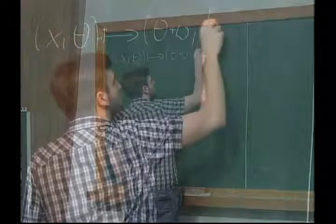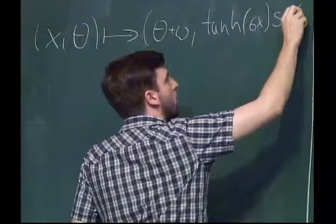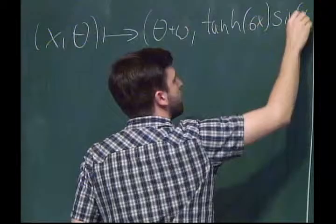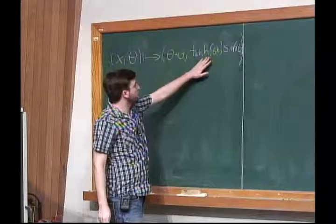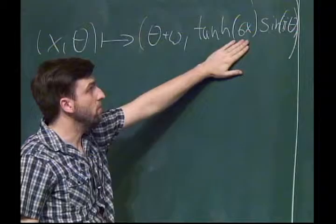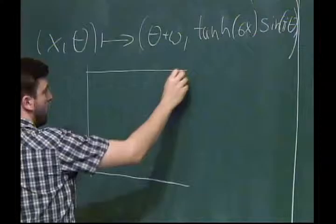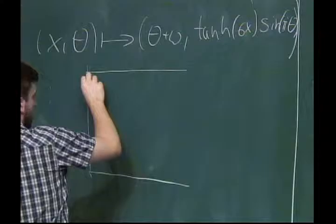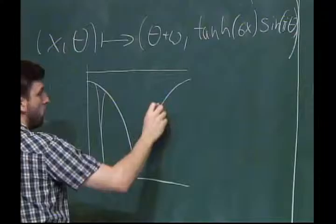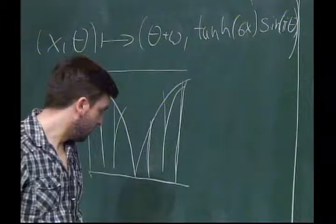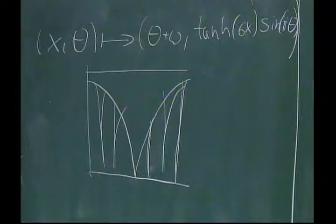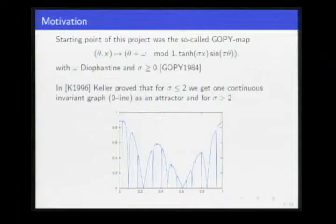Just as a quick explanation: the tangent hyperbolicus leaves invariant the zero line, and the sinus makes a pinching at theta equal to zero. If you look at the first iterate of a straight line, you get something that looks like this. If you continue iterating forward, you will see more and more peaks, and this gives you this picture of the strange non-chaotic attractor.